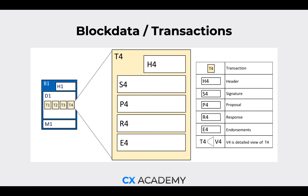Diving a little deeper — if we inflate a transaction, we can see it has a header, a signature, a proposal, a response, and endorsements. All the relevant data is needed to make sure that the transactions are in chronological order and that we can find individual transactions. That is done with the Merkle root, the Merkle tree, but we're not going to worry about that just yet.